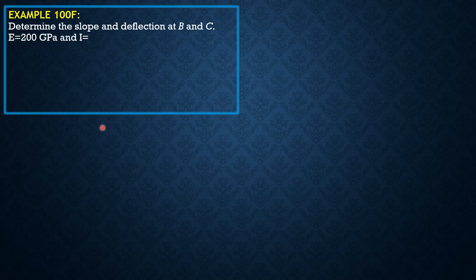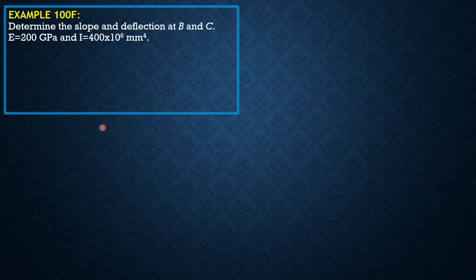Determine the slope and deflection at B and C. E is 200 gigapascals and I is 400 times 10 to the 6 mm to the 4th. We solve this by double integration method.